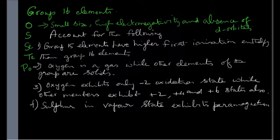The question is account for the following. The first one: group 15 elements have higher first ionization enthalpy than group 16 elements. You know as you move from left to right along a period ionization enthalpy increases.